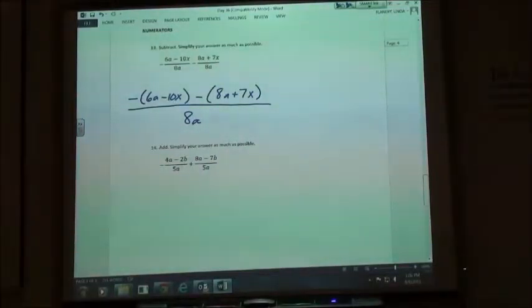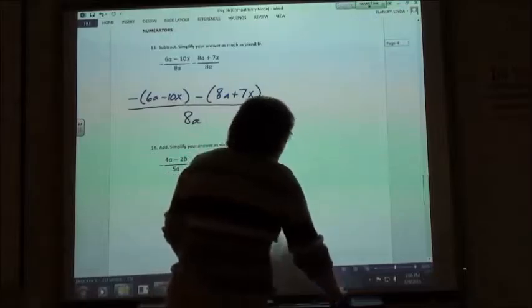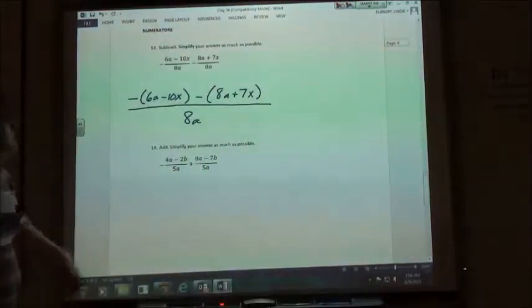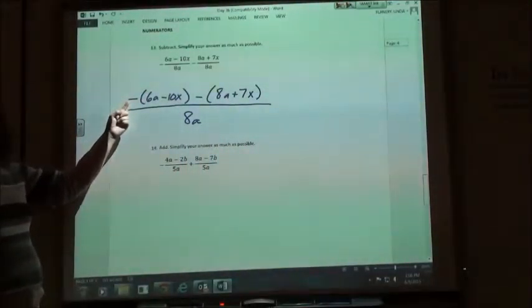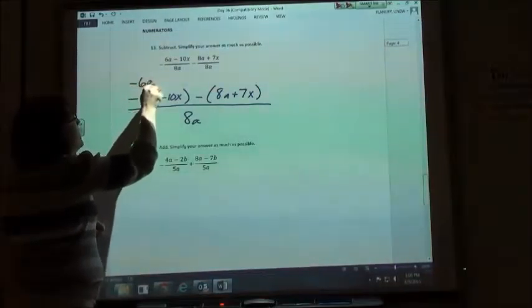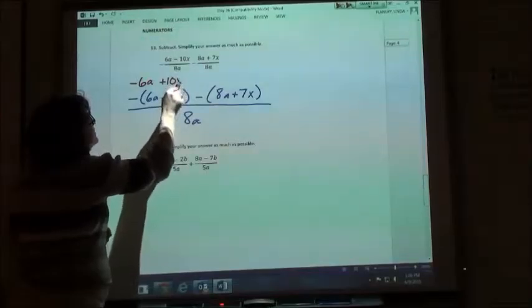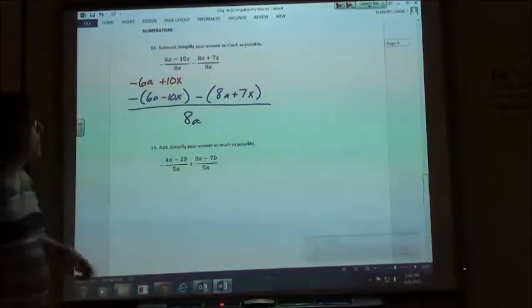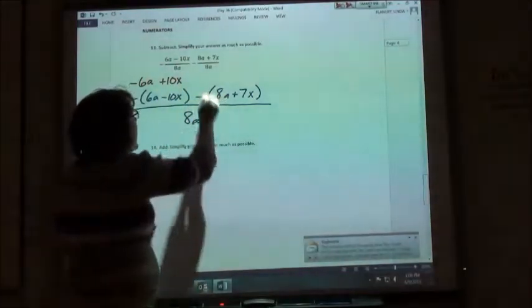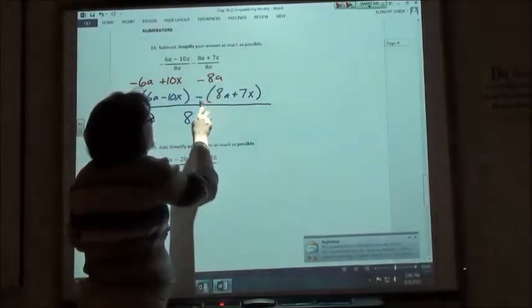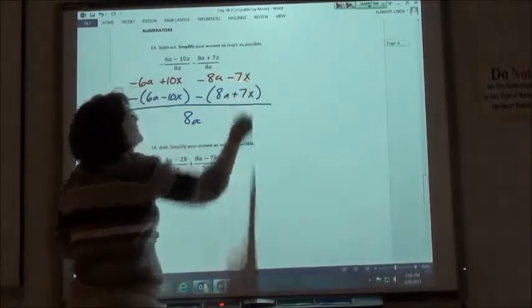Now I have to get rid of those parentheses by using my distributive property. So this would be negative 6a and then a negative and a negative make that a positive 10x. This would be negative 8a and a negative and a positive make that negative 7x.